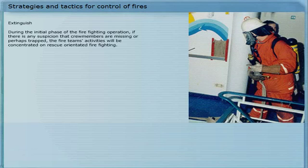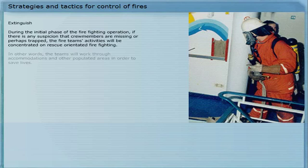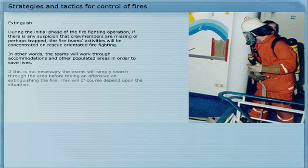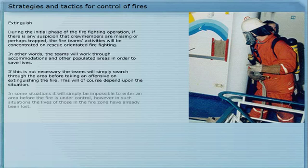During the initial phase of the firefighting operation, if there is any suspicion that crew members are missing or perhaps trapped, the fire team's activities will be concentrated on rescue-orientated firefighting. In other words, the teams will work through accommodations and other populated areas in order to save lives. If this is not necessary, the teams will simply search through the area before taking an offensive on extinguishing the fire. This will, of course, depend upon the situation. In some situations, it will simply be impossible to enter an area before the fire is under control.